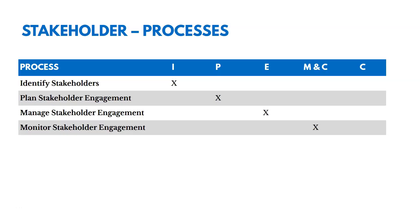There are four processes in this knowledge area: identifying stakeholders in initiating, planning stakeholder management in planning, managing stakeholder engagement in executing, and controlling stakeholder engagement in monitoring and controlling.